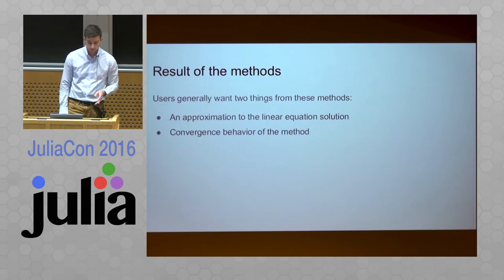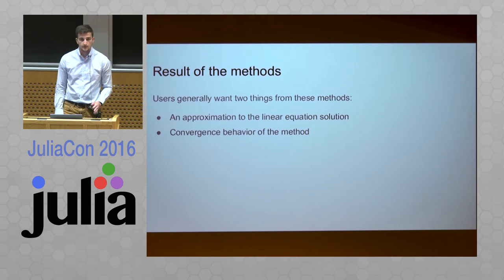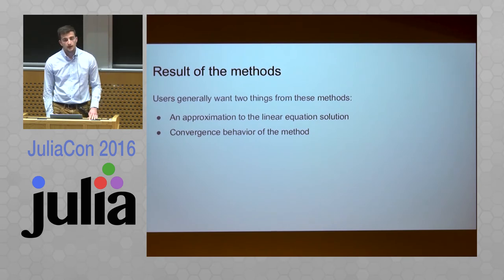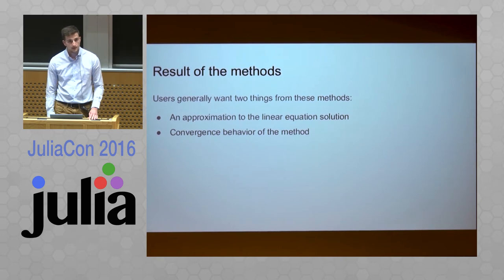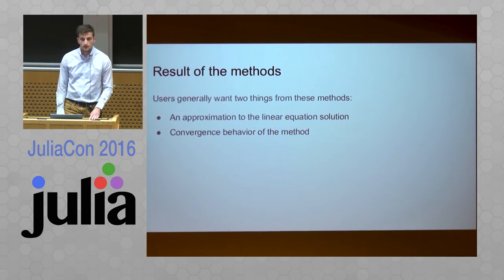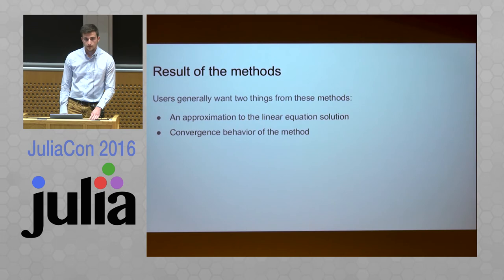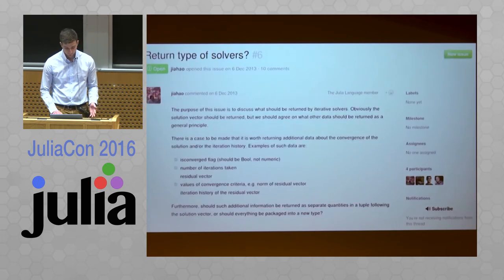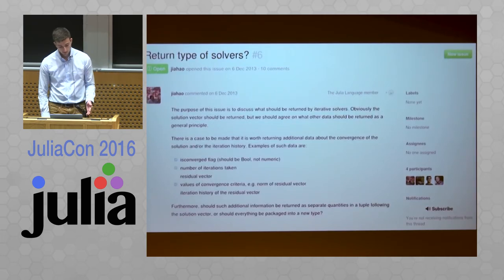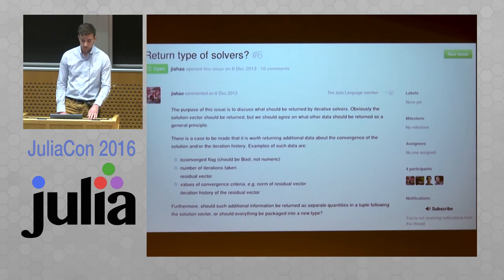So the results of the methods — usually there are just two things returned: the approximate solution and the convergence history, which consists of some flags and an array of the residual norms at each iteration. Right now, the return type of the solvers is still in discussion.